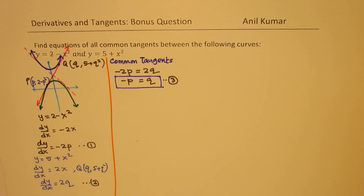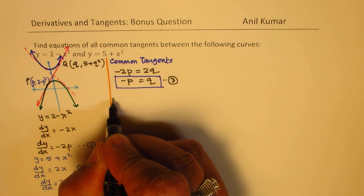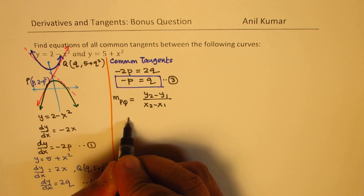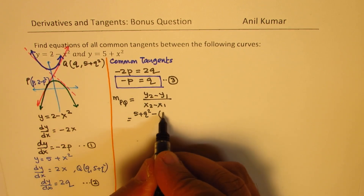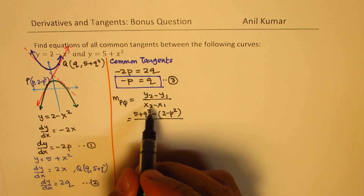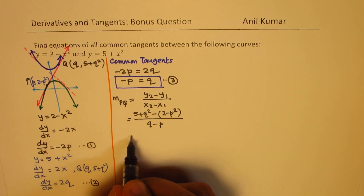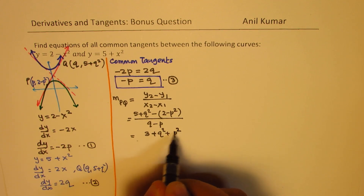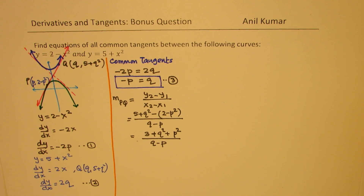We can also find the slope using the two-point formula. Slope m from P to Q is y2 minus y1 over x2 minus x1. In our case, that is: 5 plus q squared, minus 2 minus p squared, all divided by q minus p. Simplifying, we get 3 plus q squared plus p squared, over q minus p.